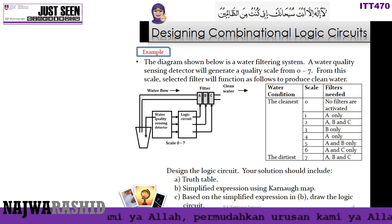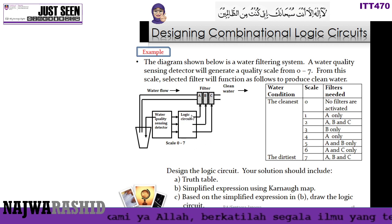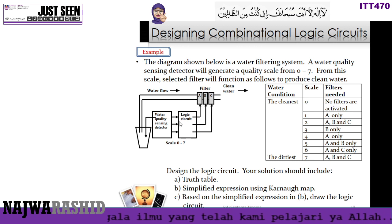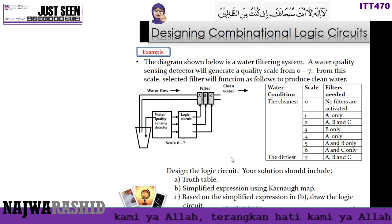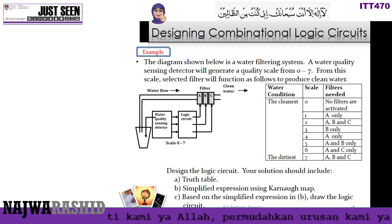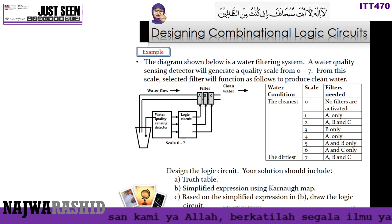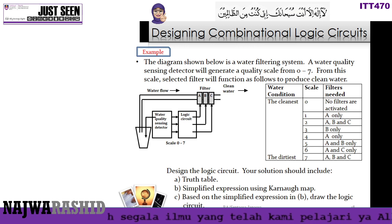The task is to design this combinational logic circuit based on the given conditions. The steps are: first, draw the truth table for the logic circuit; second, simplify the Boolean expression using the K-map; and third, draw the logic circuit based on the simplified expression.